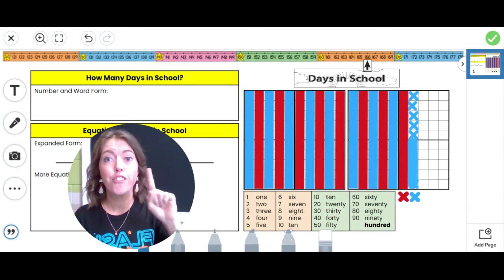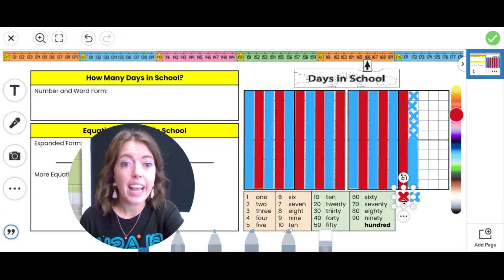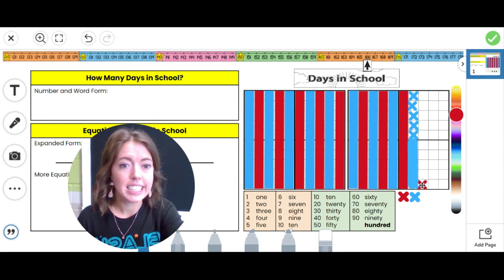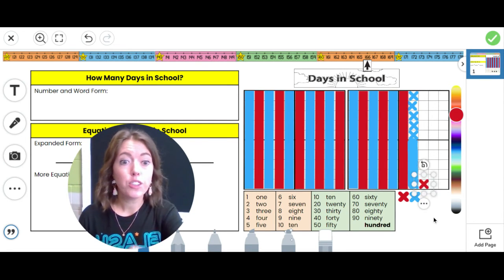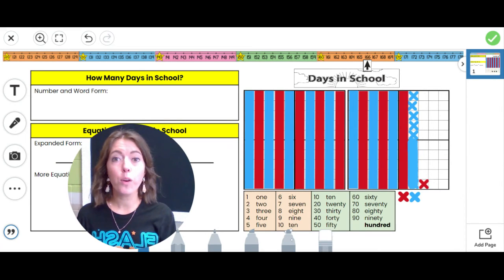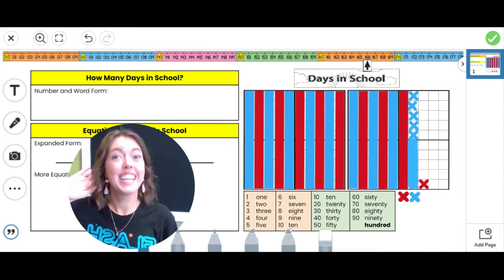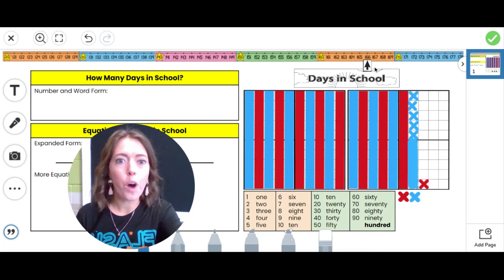But we still have one more day to add for Friday. I'm going to get the red X and add it down here. One hundred seventy plus one more equals one hundred seventy-one.